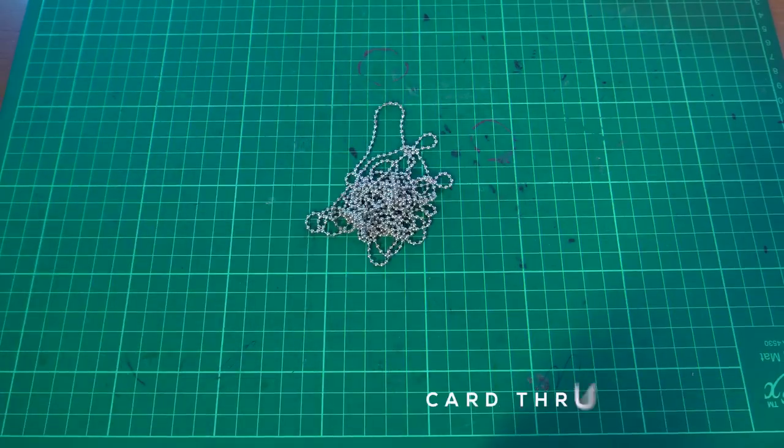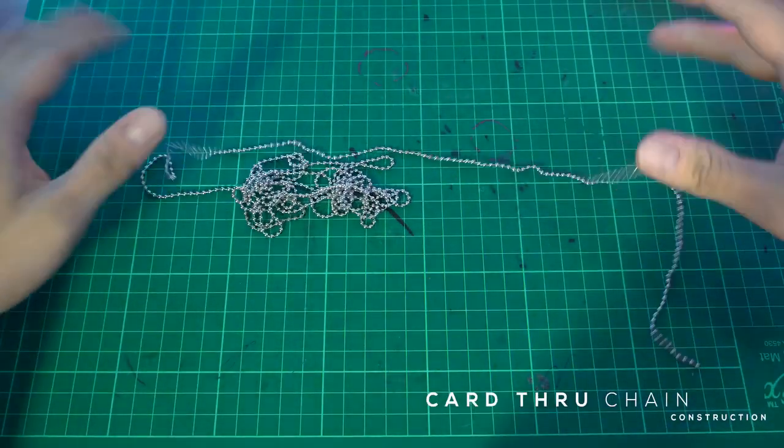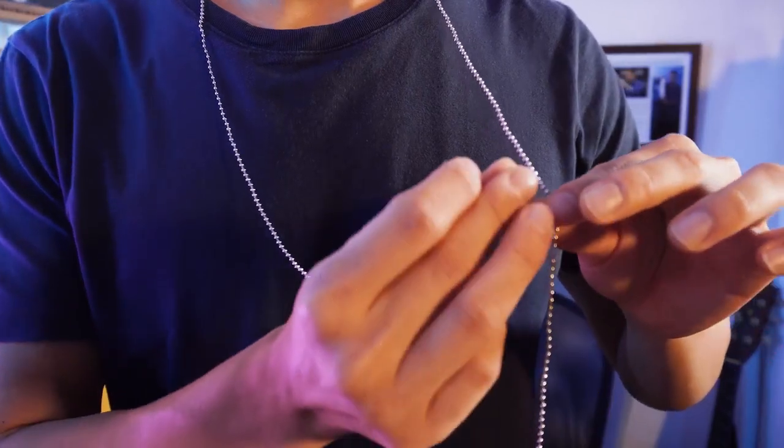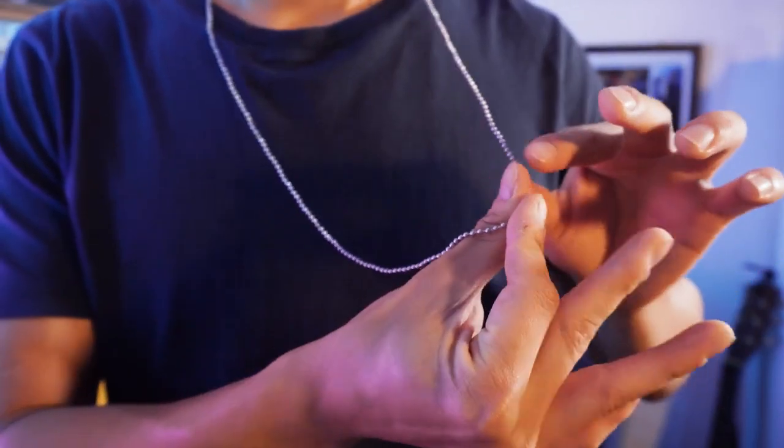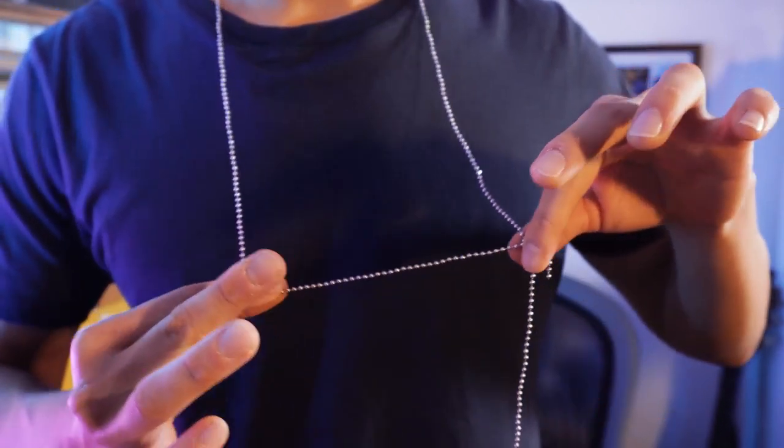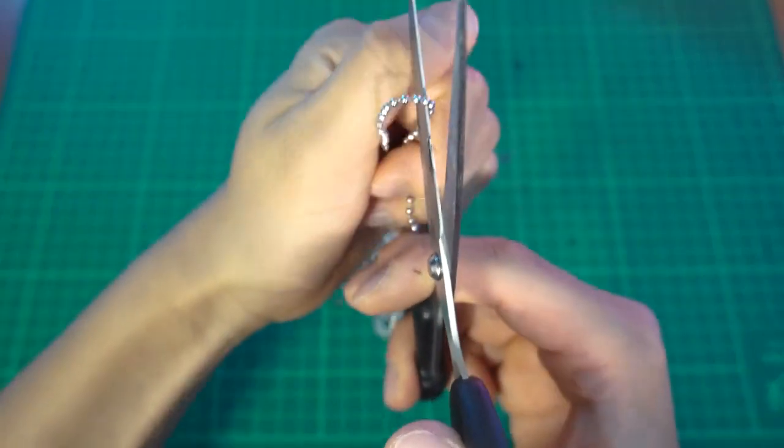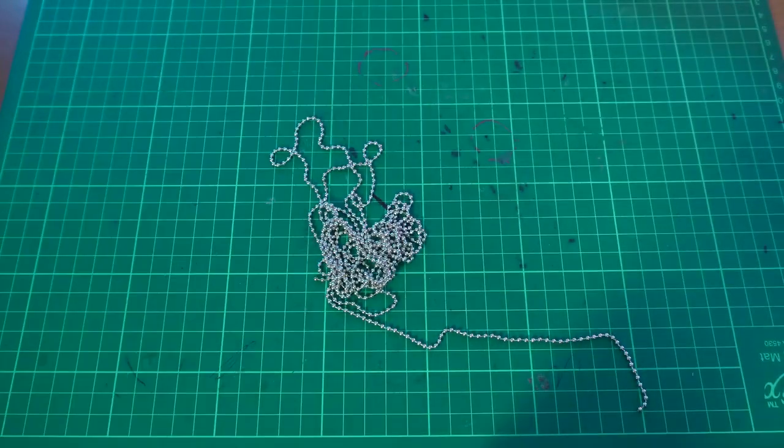Let's start with the chain. As you can see, this is a very long chain. So you need to measure this according to your height. What I normally do is I loop the chain around my neck and let it hang until right about there, the lower chest area. And then I just take the chain, give it a quick snip. And then that is the perfect length. By the way, I am 6 foot tall.